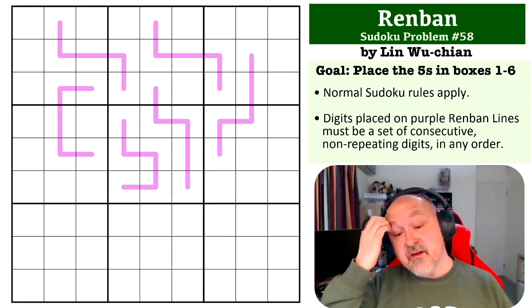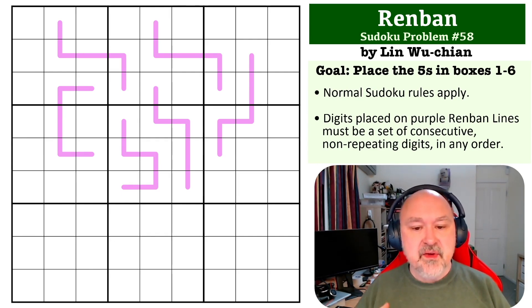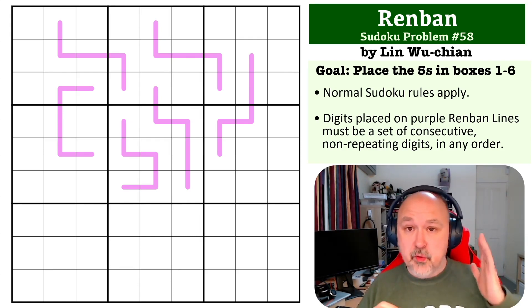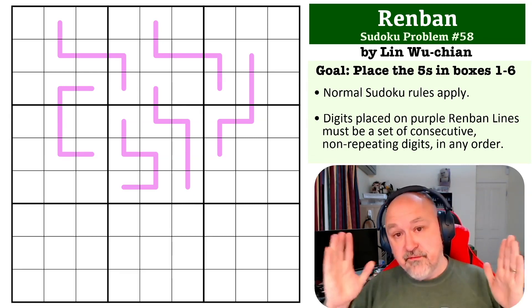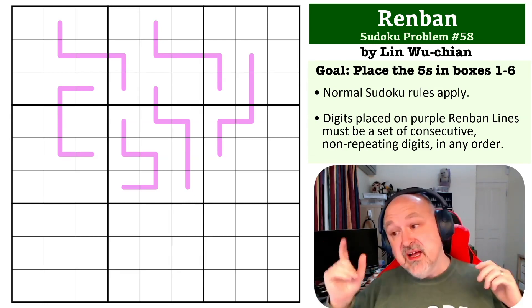Okay, so this one involves knowing a little bit about Renbans and then doing some geometry. If you think about a Renban, and all of these are five cell long Renbans, any five cell long Renban line must have a five on it because if you start with a one and go up one, two, three, four, five, you get a five on the line.